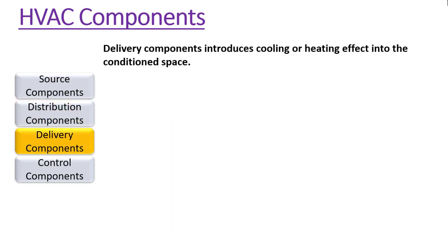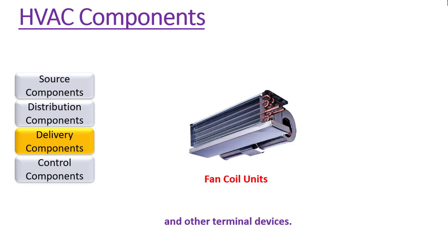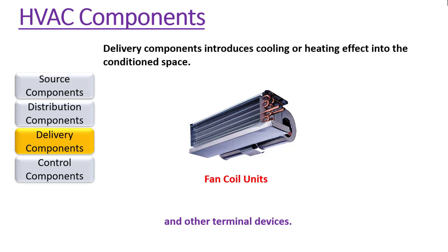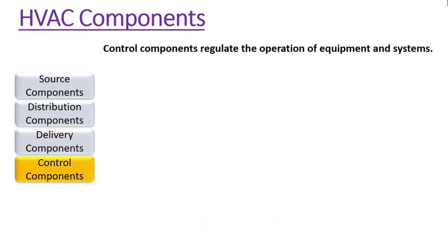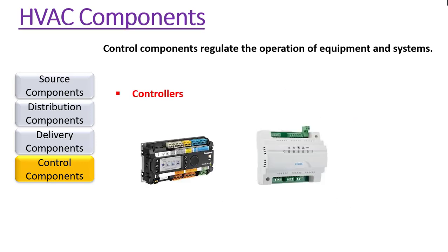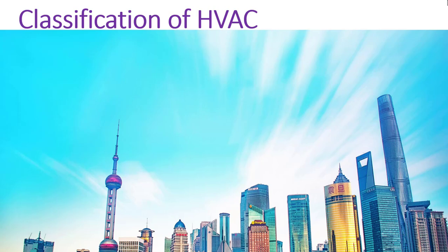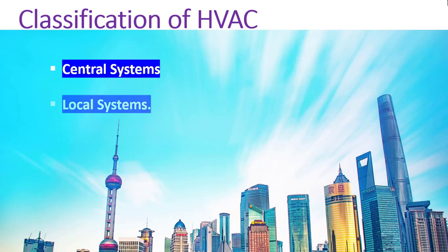Delivery components introduce the cooling or heating effect into the conditioned space. These may include diffusers, baseboard radiators, fan coil units, and other terminal devices. Control components regulate the operation of equipment and HVAC systems; these may include input devices such as sensors and push buttons, and controlled devices such as valve and damper actuators.